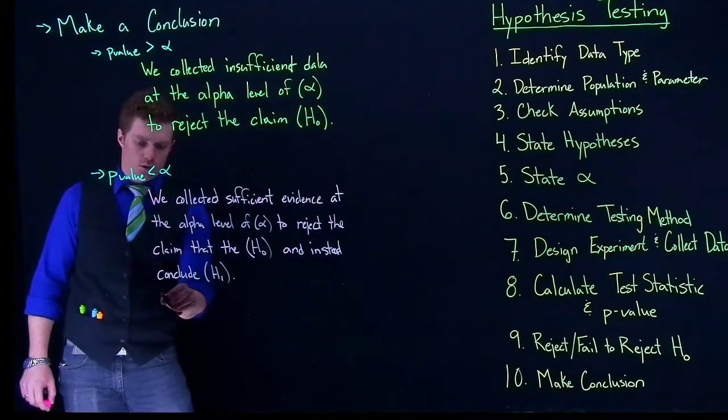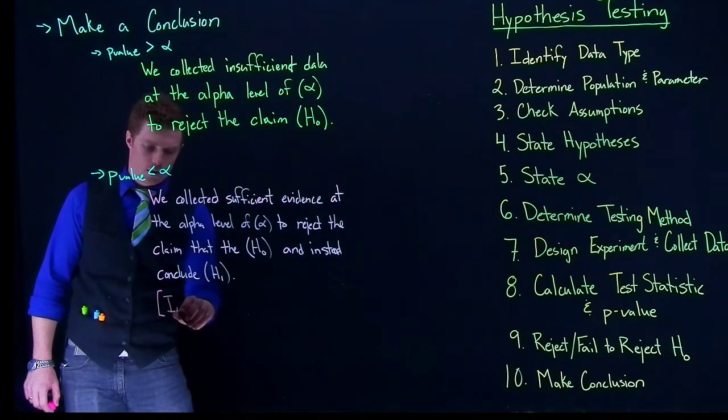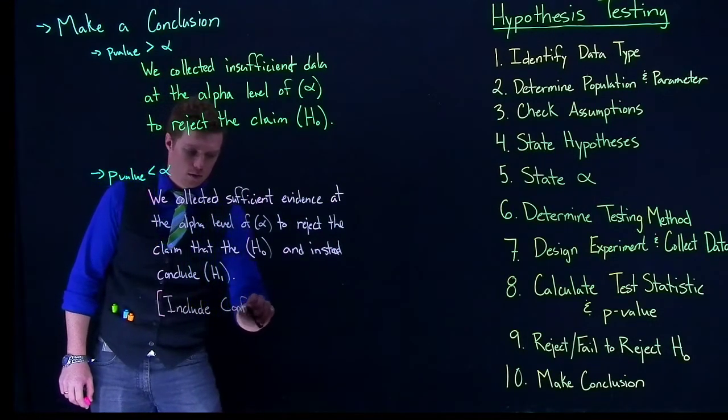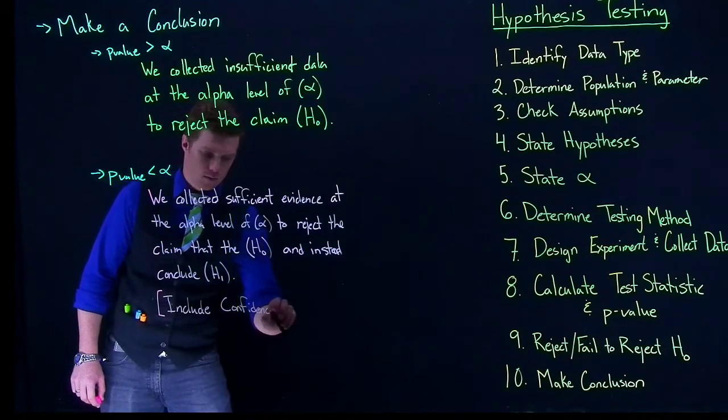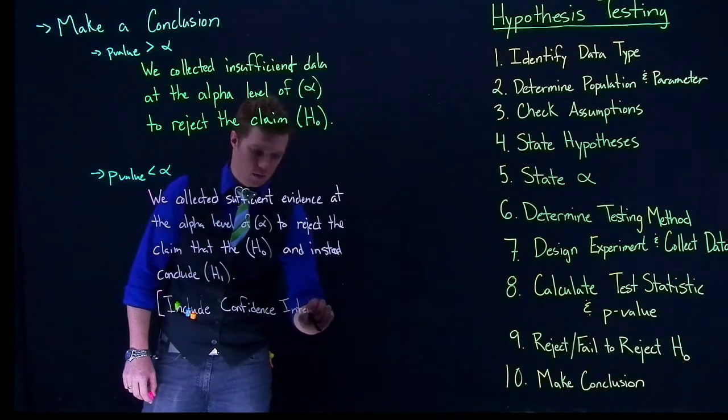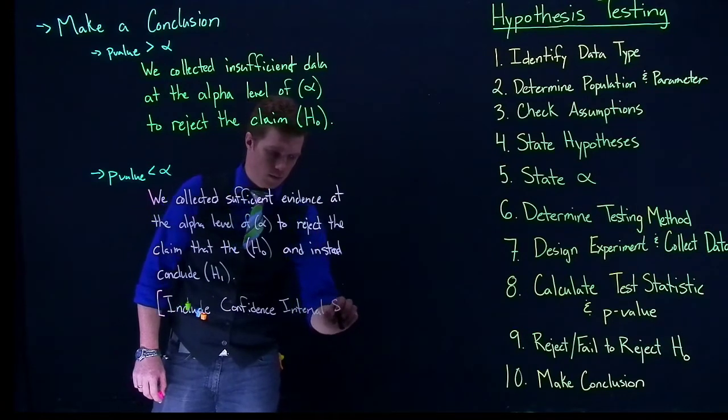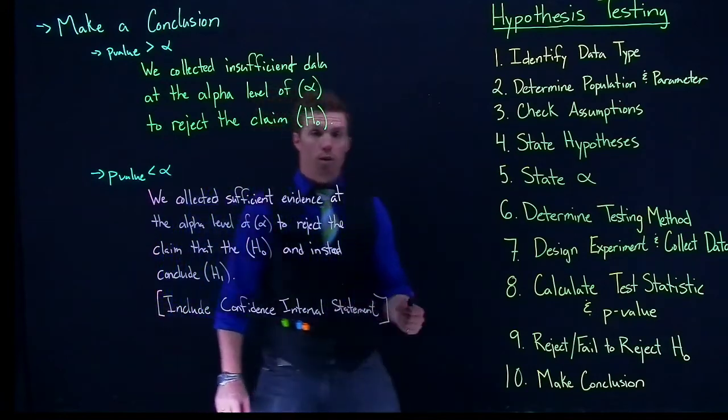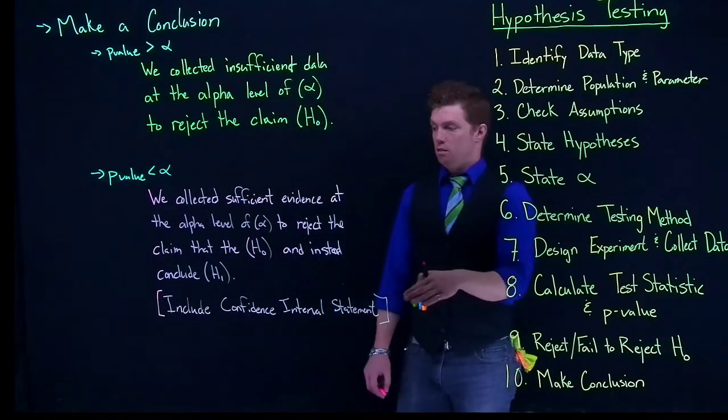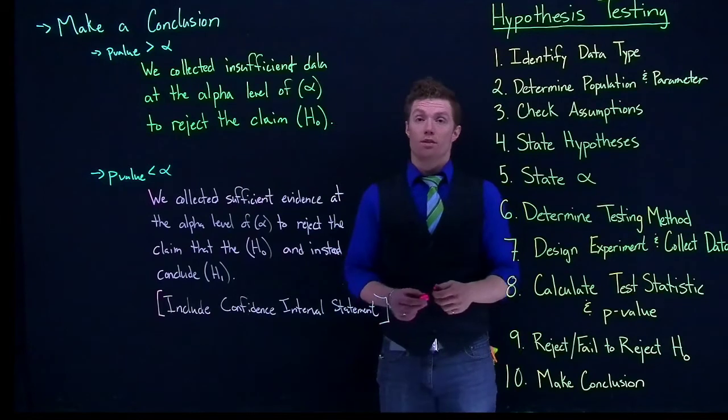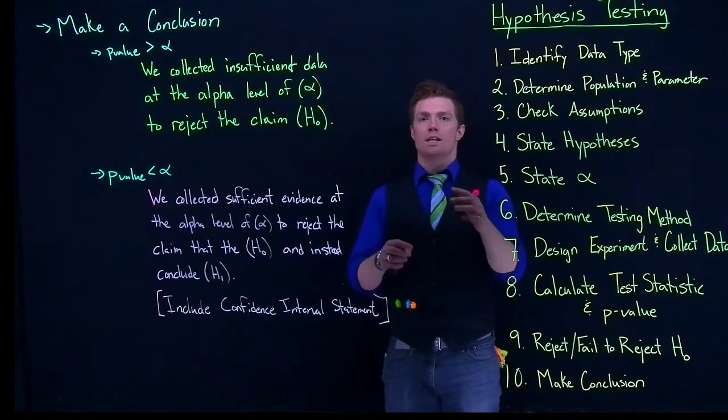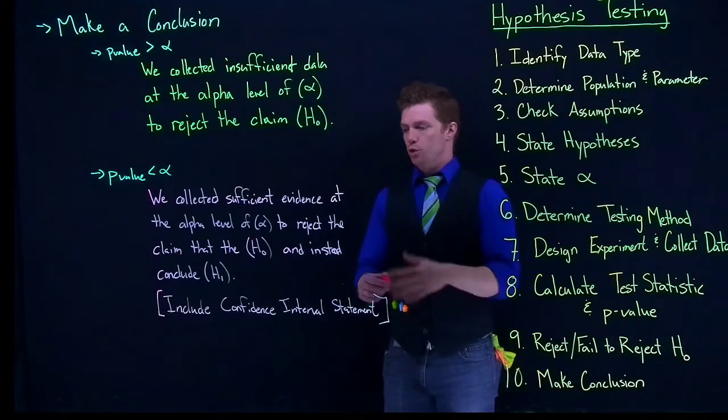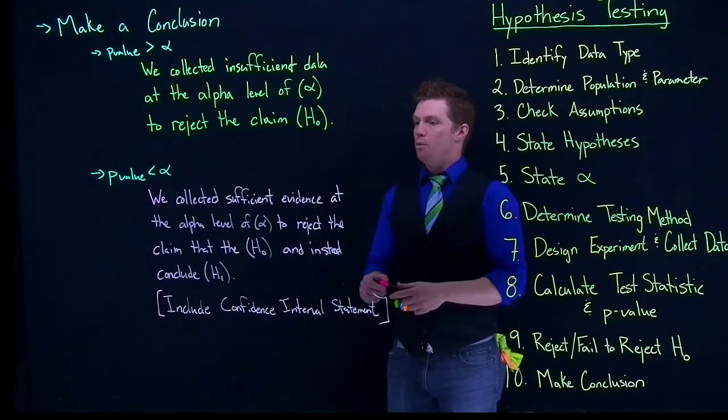And when that happens, then we also need to include a confidence interval statement. And so we've done this already. So basically, we just need to calculate out the confidence interval for the scenario, and then use that same methodology that we use for confidence intervals, like saying we're 95% confident that the true mean is located somewhere between a couple values.